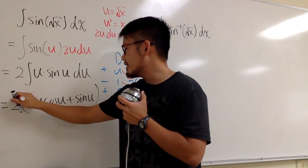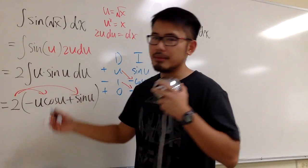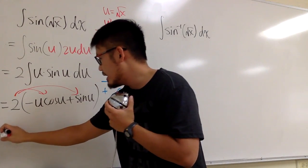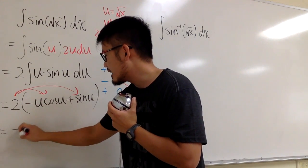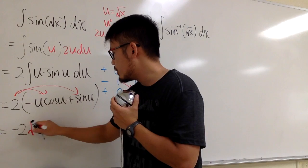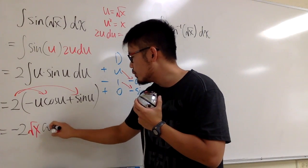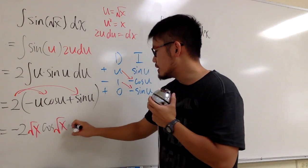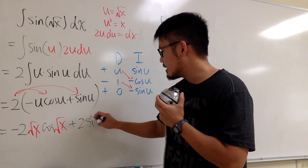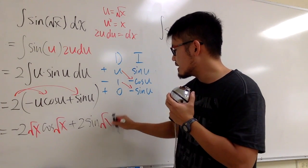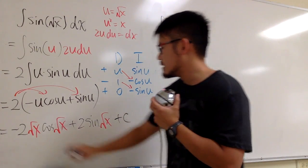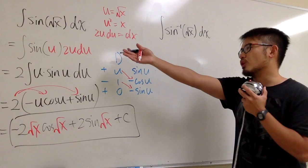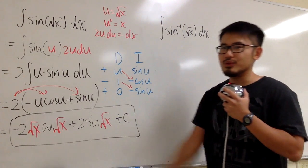The first part of the answer is positive u times negative cosine u, giving negative u cosine u. The second part is negative 1 times negative sine u, giving plus sine u. At the very end, we take the 2 and distribute it, then plug u — which is the square root of x — back in. So we get negative 2 times the square root of x times cosine of the square root of x, plus 2 times sine of the square root of x, plus C. This is the answer for the integral of sine of the square root of x.